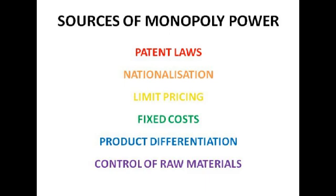The next one is quite similar — it's basically fixed costs, where the incumbent firm creates expensive fixed costs. Say you're selling perfume and I'm also selling perfume and you've got a monopoly; you might suddenly put out a massive advertising campaign and I simply can't afford to compete with that. If I want to get more market share, I'd have to pay a lot of money without being sure of the return. And that's a sunk cost — once you've paid for your advertising campaign, you can't get that money back.